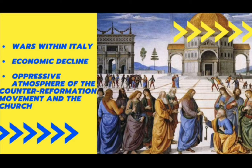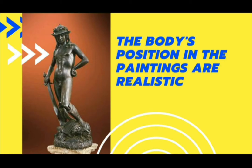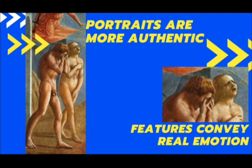The Church strictly censored artists and their work, which constricted their creativity. Because of these factors, the Italian Renaissance died out. Humanism was a scheme of thought that affixed more importance to man. To preserve the significance of humanism, all finished work by the artists during the early Renaissance aimed to fulfill the significance of realism. Realism is a way of presenting the work truthfully or naturally as can be seen in real life. Portraits are more authentic, the various positions in the paintings are realistic, and the features convey real emotion that can attract the audience.